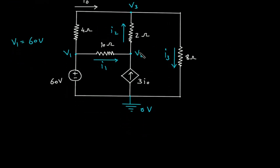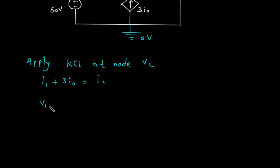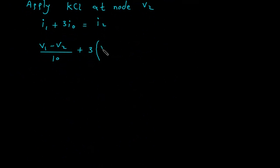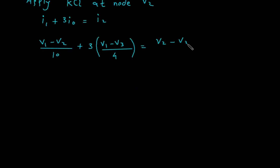Now we will apply KCL at node V2. Incoming current at this node is I1 plus 3I₀, which is equal to leaving current I2. So: (V1 − V2)/10 + 3I₀ = (V2 − V3)/2, where I₀ = (V1 − V3)/4.